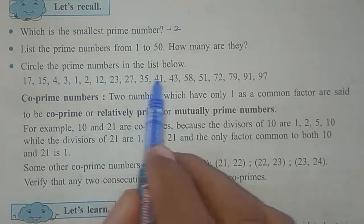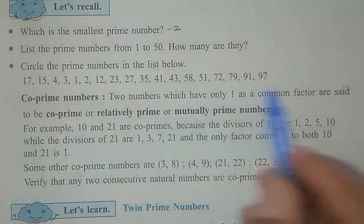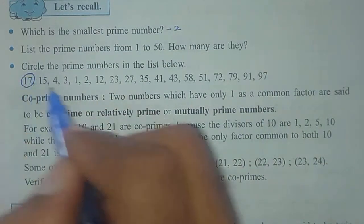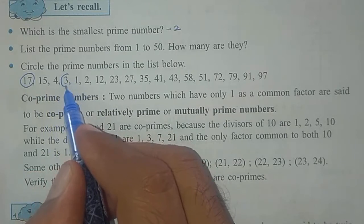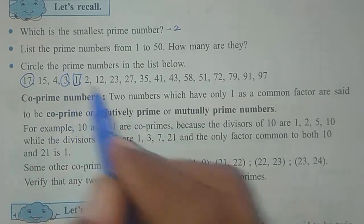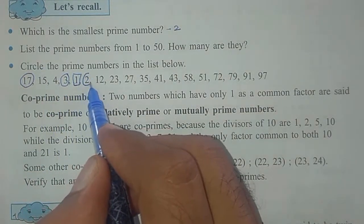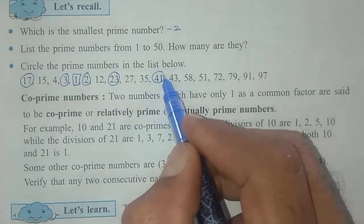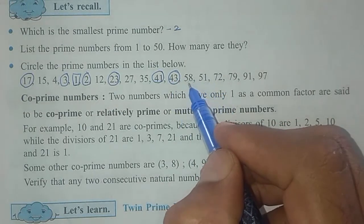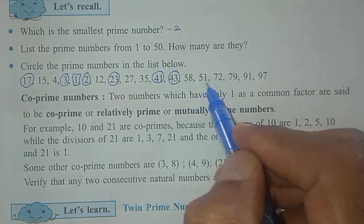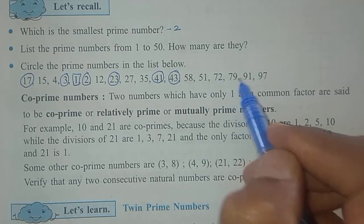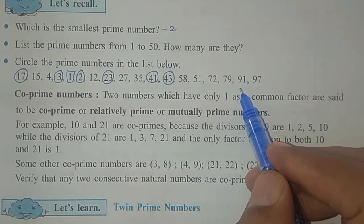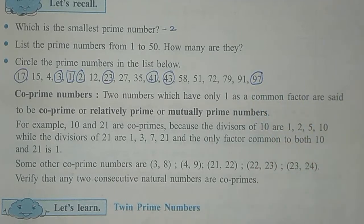The next point is: circle the prime numbers in the list below. From the given list, we have to identify the prime numbers. 17 is prime, 3 is prime. 1 is neither prime nor composite. 2 is prime. 23 is prime. 41 is prime. 43 is prime. 58 is in the 2 times table, not prime. 51 is divisible by 17. 79 is prime. 91 is in the 13 times table. 97 is a prime number.